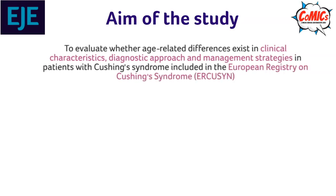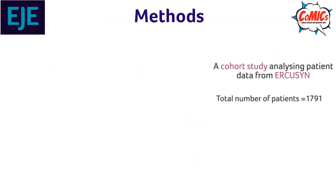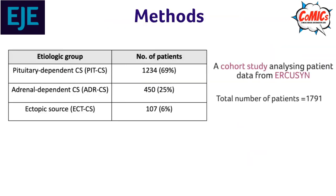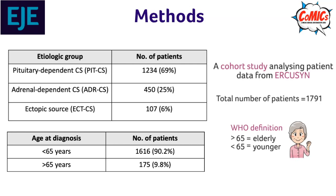The aims of the study were to describe any age-related differences in clinical characteristics, diagnostic approach, management strategies, treatment outcome, and mortality in patients with CS included in the European registry on Cushing syndrome. This was a cohort study looking at data from nearly 1800 patients. Patients were subgrouped by etiology, with a majority having pituitary-dependent CS, and classified as older or younger according to the Hue criteria.